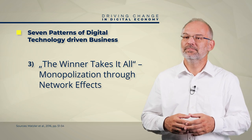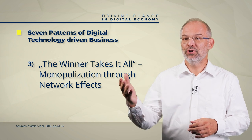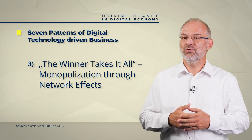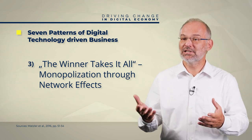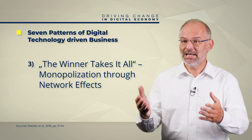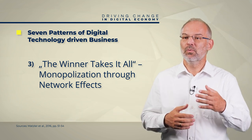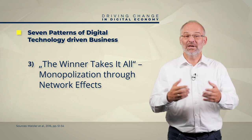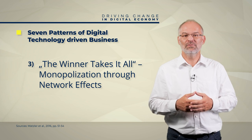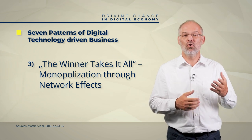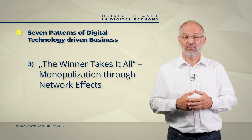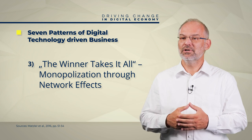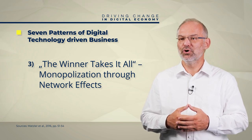Third, the winner takes it all — monopoly formation through network effects. The fastest growth of these business models can be explained by network effects. A network effect occurs when the benefit of a product or service changes with the number of customers. In the case of positive network effects, the benefit for a customer increases the more other customers use this product — for example, with Facebook, X, WhatsApp or Instagram. This phenomenon can easily lead to monopoly formation.